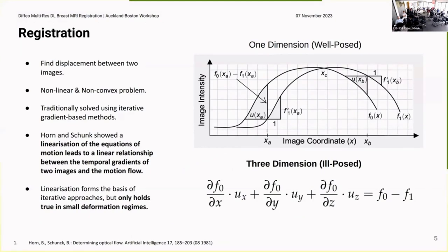So just for some context, registration is simply finding the displacement between two images. It's a non-linear and non-convex problem, traditionally solved by gradient-based methods. These gradient-based methods are based on the work of Horn and Schunck. They showed that linearization of the equations of motion leads to a linear relationship between the temporal gradients of two images and the motion flow. So here's a 1D example where you can see displacement u using just the two images and the spatial gradient of one of the images.